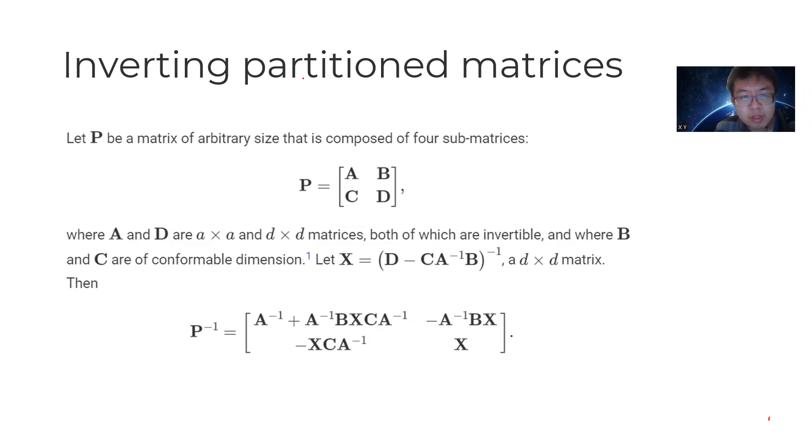Let's say A is an A by A matrix, D is a D by D matrix, B is A by D matrix, and C is D by A matrix. Both A and D are invertible, and B and C are of conformable dimension.